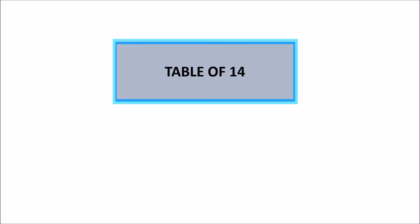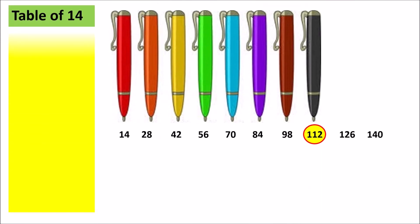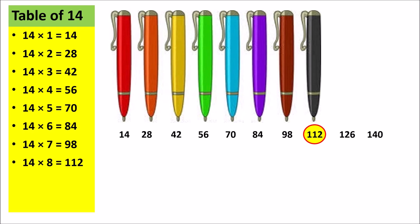Table of 14. If the cost of 1 pen is Rs. 14, let us find out the cost of 8 pens. 14 1s are 14, 14 2s are 28, 14 3s are 42, 14 4s are 56, 14 5s are 70, 14 6s are 84, 14 7s are 98, 14 8s are 112, 14 9s are 126, 14 10s are 140. So the cost of 8 pens is Rs. 112.